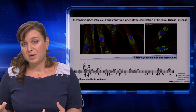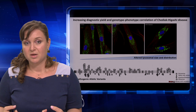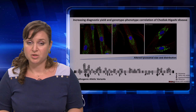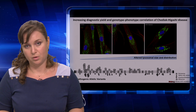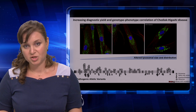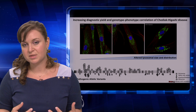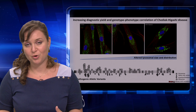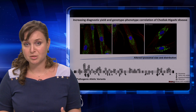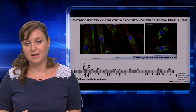An inability to make one of these enzymes, or a problem in lysosomal formation, can lead to rare disorders called lysosomal diseases. Chediak-Higashi disease, or CHD, is one example of a rare lysosomal disease caused by mutations in the lysosomal-regulated gene LYST.